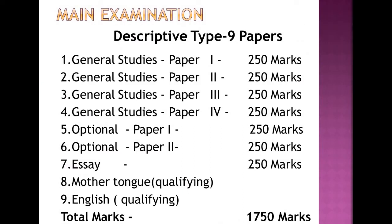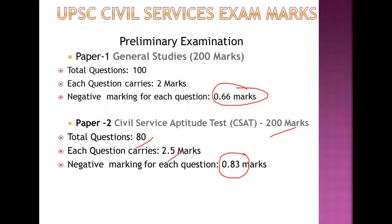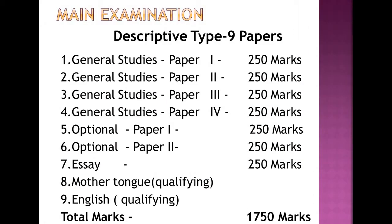In the Main Examination there are 9 papers in total: 4 papers of General Studies, 2 papers of optional subject, 1 essay paper, and 2 qualifying papers — making 9 papers altogether. The 2 qualifying papers are just pass/fail. The 4 General Studies papers carry 250 marks each, totaling 1000 marks. For the optional subject, you select one from a list and it is divided into 2 papers of 250 marks each, totaling 500 marks. The essay carries 250 marks.